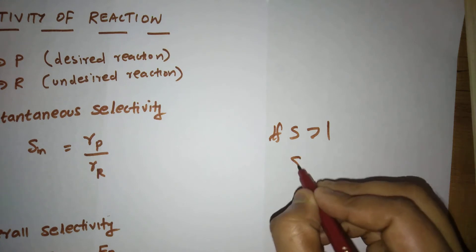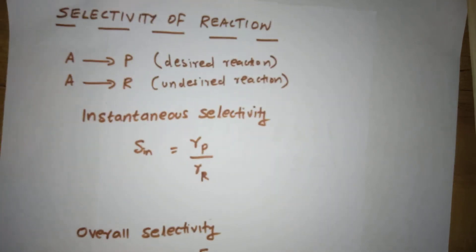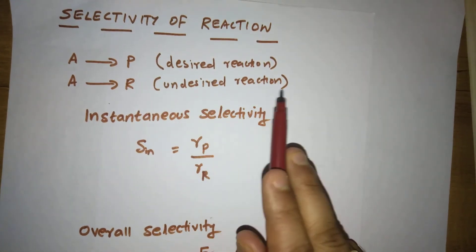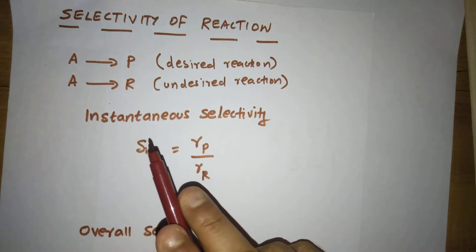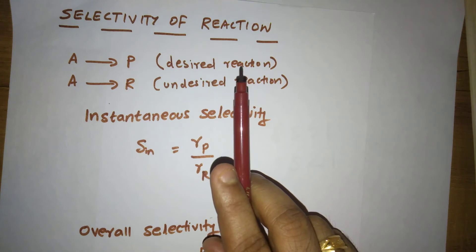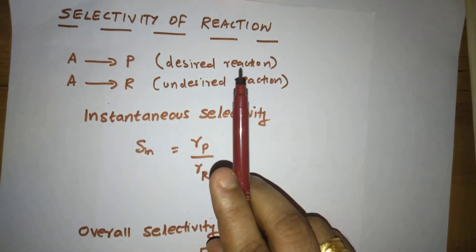If the selectivity is less than one, the undesired reaction or side reaction will be dominating. In that kind of situation, we will not get the proper amount, the actual amount of our desired product.